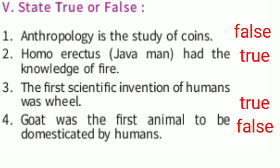State true or false. Anthropology is the study of coins — that is false; the study of coins is numismatics. Homo erectus, the Java Man, had knowledge of fire — that is true. The first scientific invention of humans was the wheel — that is true. Goat was the first animal to be domesticated by humans — that is false; actually, the dog was the first animal domesticated by humans. We will see the question answers in the next episode. Thank you, children — hope you all understood.